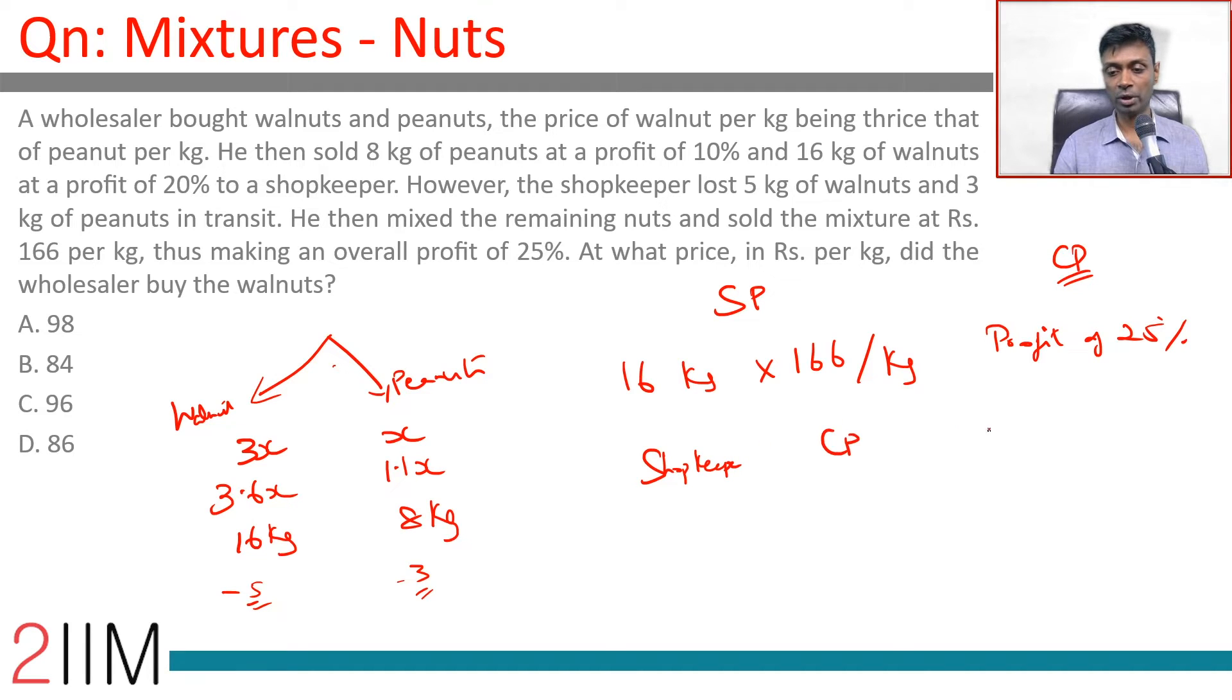there is some cost price and some selling price, profit of 25 percent. Selling price is this, if cost price were CP and selling price is 5 by 4 CP, 5 by 4 CP is this number.